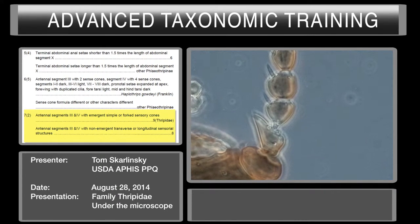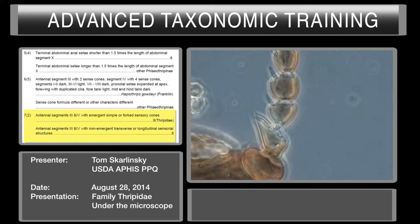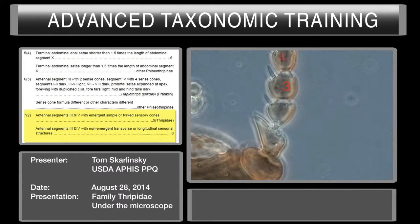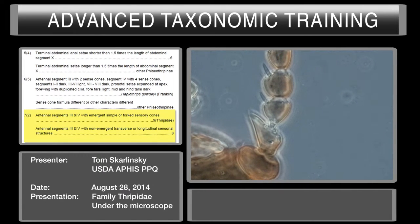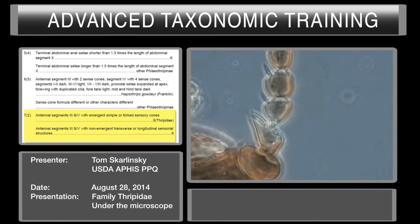Okay, here's an example of a simple sense cone on this other side. We've got segment one, two, three, four. So the question is: are they emergent? Are they simple or are they forked? This is an example of a simple sense cone.